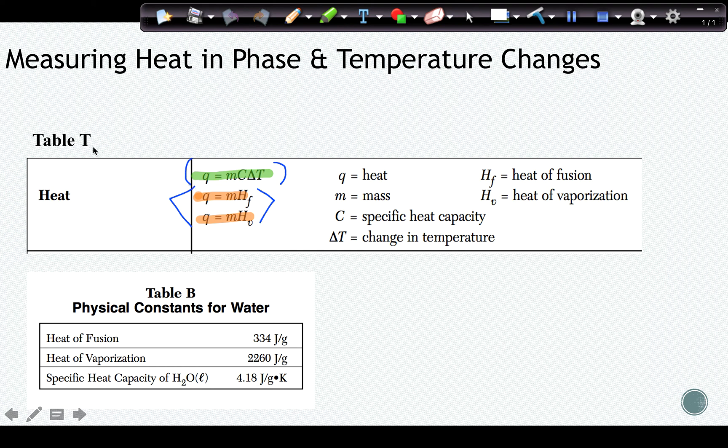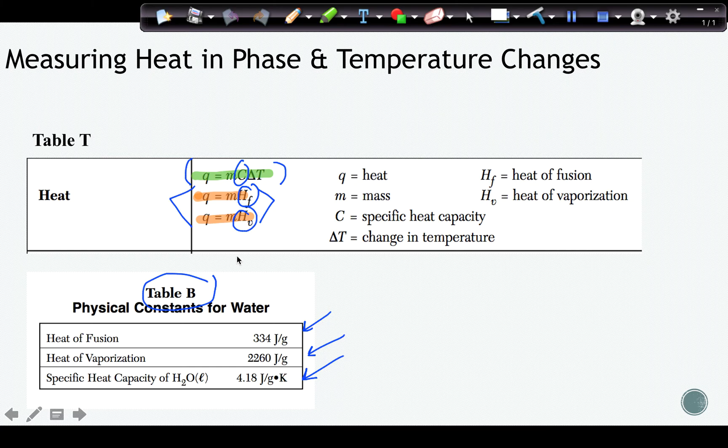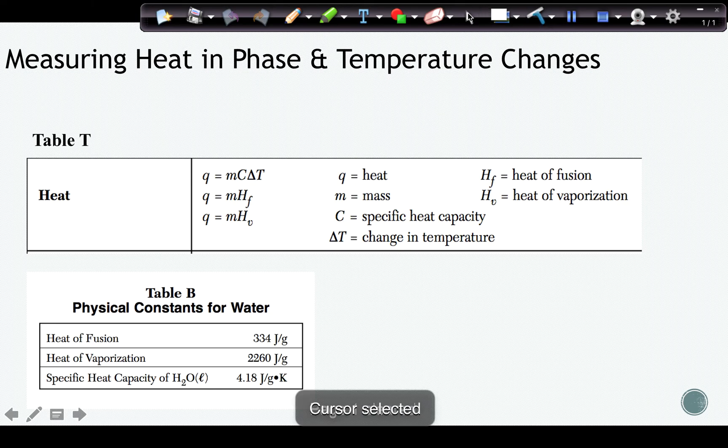We're going to use the information on table T along with table B, because we need to know the heat of fusion for water, the heat of vaporization, and the specific heat capacity. And those are the different pieces of the formula. So we're always going to have to use these heat formulas along with table B to fill in the correct information there.